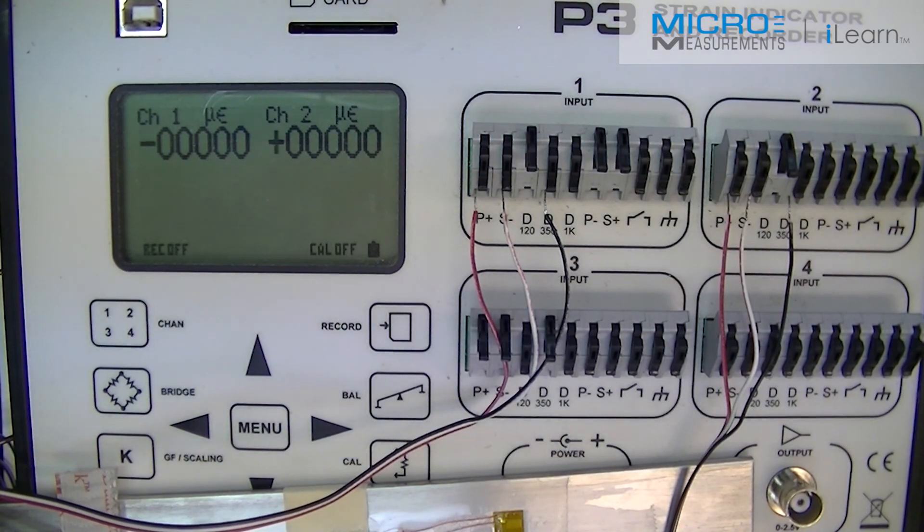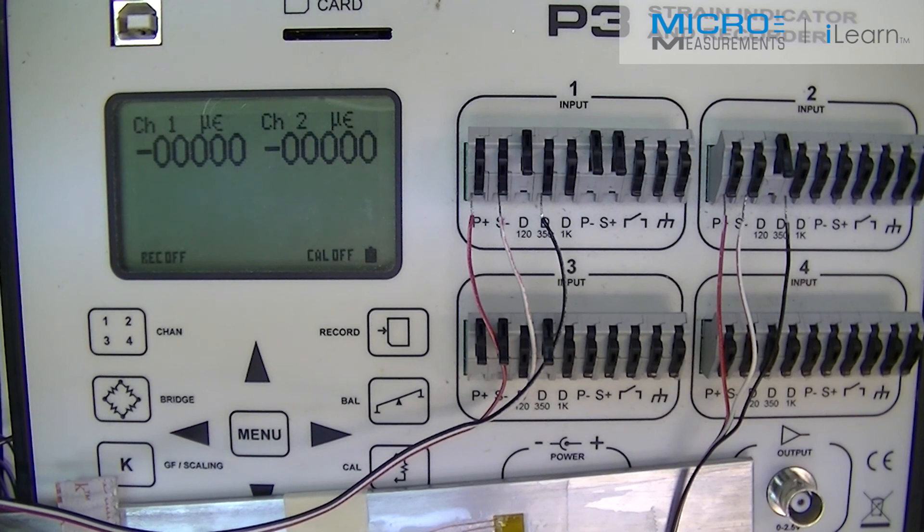Now, as we see in the display, the two bands, the two rejillas of the rosette, are indicating zero because they are not subjected to any load.